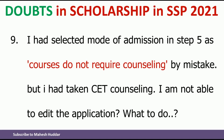I had selected the mode of admission in Step 5 as 'courses do not require counseling' by mistake, but I had actually taken CET counseling. I am not able to edit the application — what should I do? As mentioned earlier, if you make a mistake while applying for scholarship through SSP Portal, right now there is no way to edit it as the edit option has not been provided. So make sure you don't make any mistake. If you have already made a mistake, it is better to contact SSP officers — they have provided their phone number as well as email ID. Send them a mail and request an edit option. If they grant it, you can edit; otherwise, there is currently no option to edit your application.